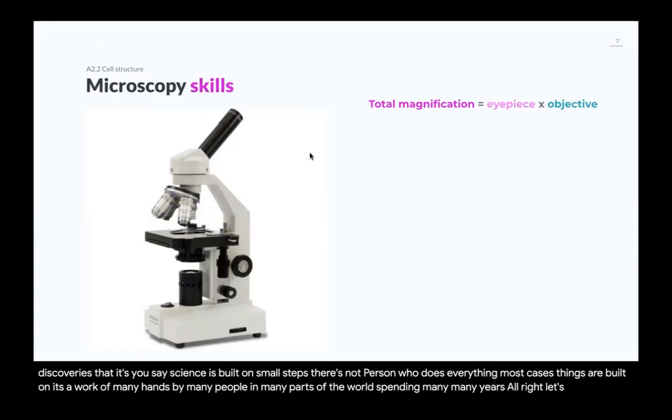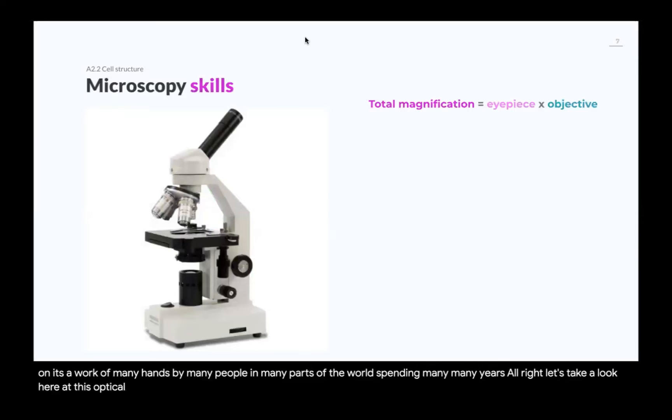Let's take a look here at this optical microscope. On this side here, we know how to calculate the total magnification of that microscope. It is the magnification of the eyepiece times the magnification of the objective.